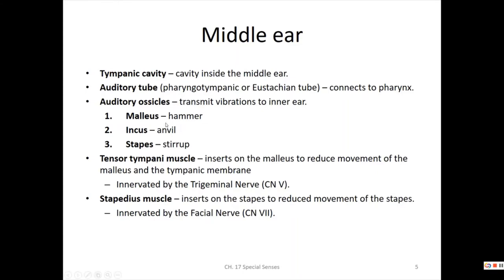The three auditory ossicles — the malleus, the incus, and the stapes, commonly called the hammer, anvil, and stirrup — take the vibrations of the tympanic membrane and transmit them to the inner ear. The inner ear converts those vibrations: sound waves become vibrations, become pressure waves, become nerve impulses.